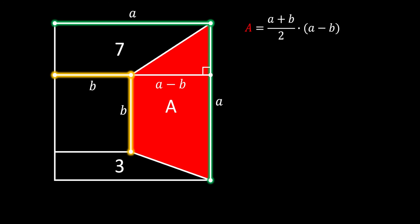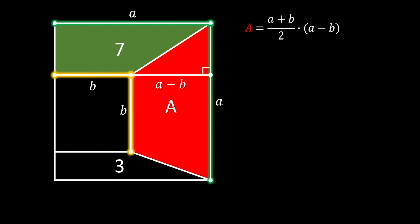Now let's turn our attention to the area on the top. This area is also a trapezium — a right trapezium — and we already know that its bases are equal to a and b, so all that we are missing is its height. Since we don't know it, we're going to label it as x. This green area equals (a + b) / 2 times x, and since we know this area equals 7, we replace it with 7.